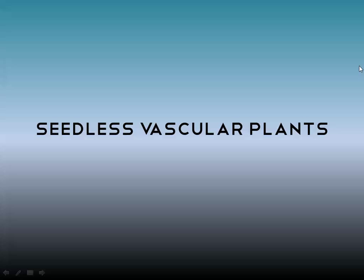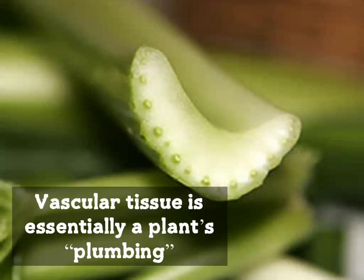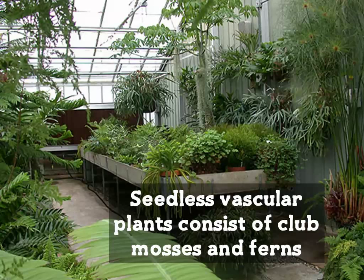This lesson is going to be on the seedless variety of vascular plants. Vascular plants contain what is known as vascular tissue, which essentially serves as the plumbing for the plants because it carries water and other dissolved substances throughout the plant.